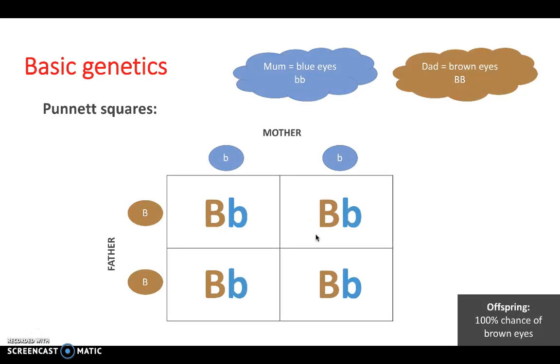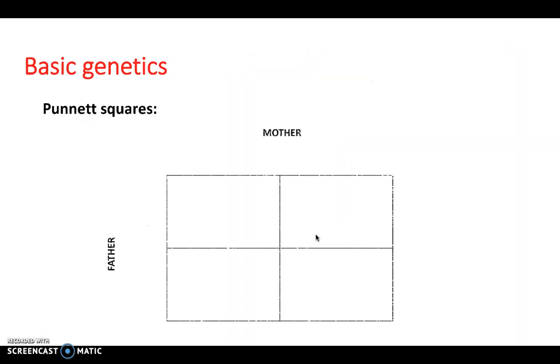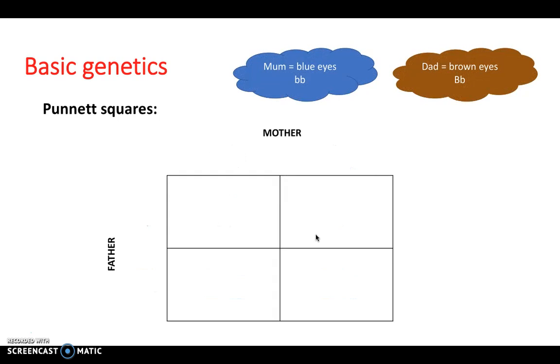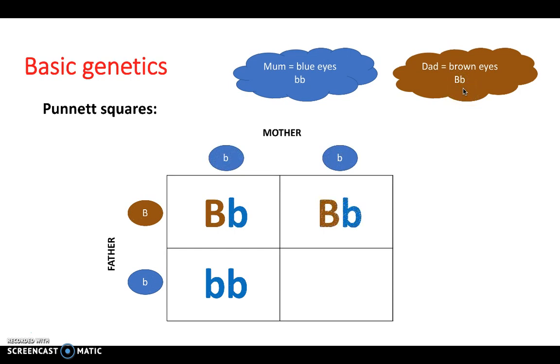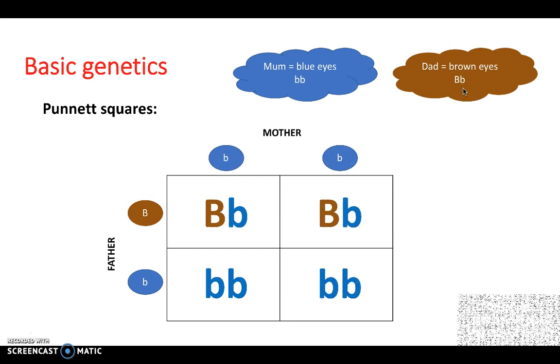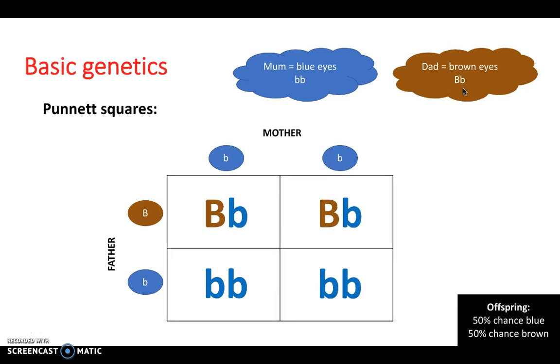Now, this can look a little bit different when we mix it up a little bit. So for example, say the mother has blue eyes, which is bb recessive. And the dad has brown eyes, which is now b dominant and b recessive, so heterozygous. The outcome will look a little bit different. So there's a 50% chance now of having blue eyes and a 50% chance of having brown eyes. In order to understand this a little bit more, create your own Punnett square and have a look at a few examples online and have a practice.